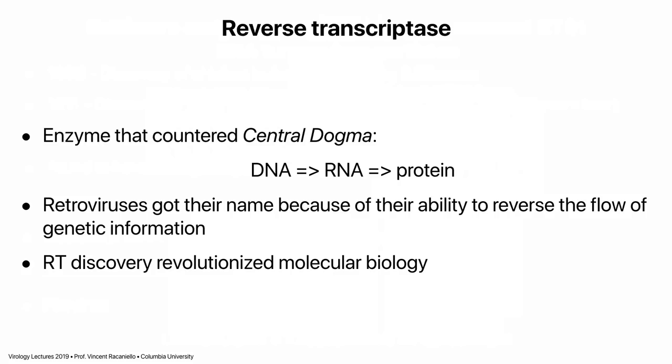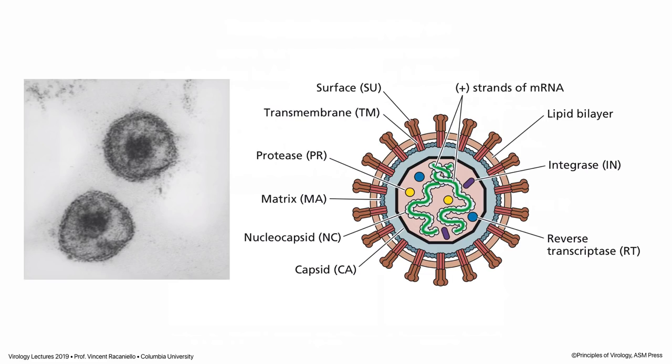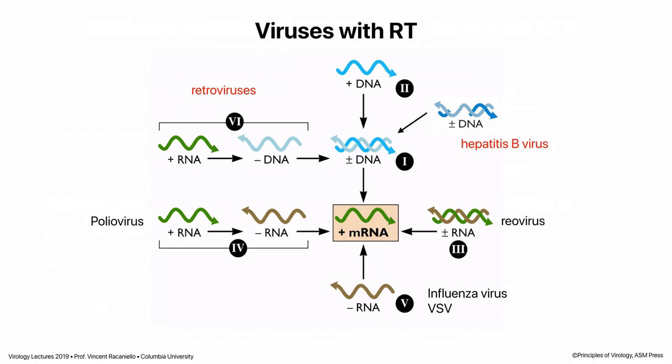There are two families of viruses with reverse transcriptase that we will discuss in terms of the Baltimore scheme. First, retroviruses, in which RT was discovered, which have an RNA genome copied to DNA. Second, hepatitis B virus, which has RT in its reproduction cycle but has a DNA genome — and we will finally understand why that DNA is gapped and has those weird features.